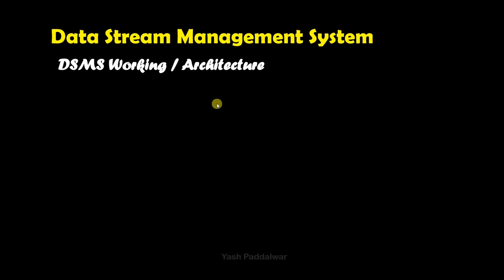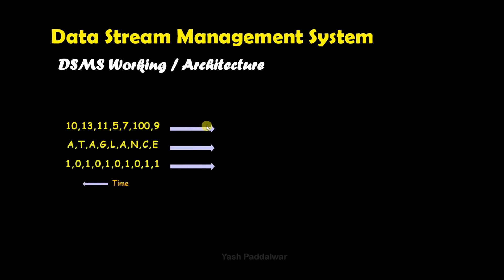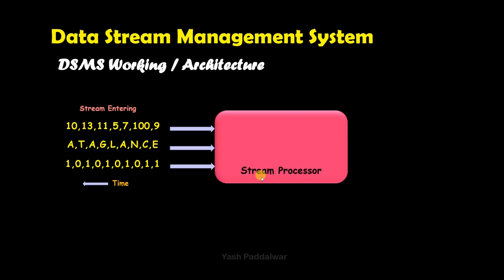Now we'll look at the working architecture of the data stream management system. The data will be in the form of streams, not only from a single source but from different sources. The data stream can include numbers, characters, binary numbers, and so on — it may be of any type, and this streaming data will enter with respect to time. These streams enter into the stream processor, which is the next component inside the DSMS architecture.